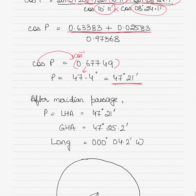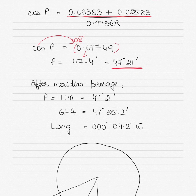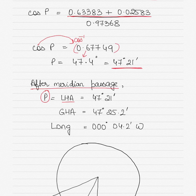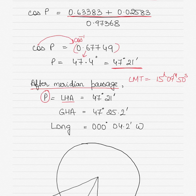For a long by chronometer question, if the observation is after meridian passage, then P equals LHA directly; otherwise it is 360 degrees minus LHA. The local mean time on the ship is around 1500 hours, well after the noon meridian passage at approximately 1200 hours, so P equals LHA equals 47 degrees 21 minutes. The GHA found earlier is 47 degrees 25.2 minutes.